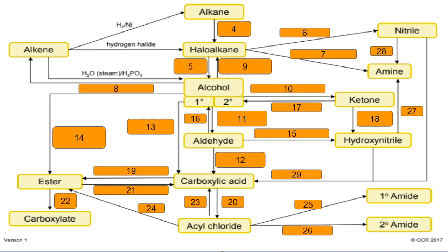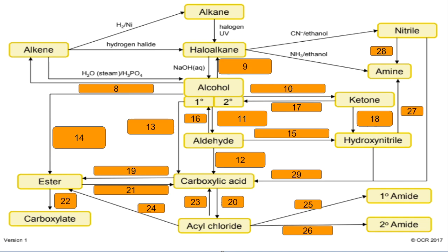Number four: alkane to haloalkane — react the alkane with a halogen and it must be in the presence of UV light. Number five: haloalkane to alcohol — react the haloalkane with aqueous sodium hydroxide and you'd normally warm that as well. Number six: haloalkane to nitrile — you need a source of cyanide ions, so that's normally KCN or NaCN, and it needs to be in ethanol.